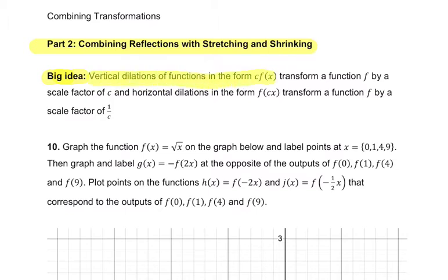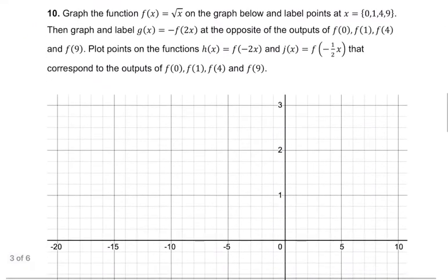Vertical dilations of this form transform a function f by a scale factor of c, vertically. In horizontal dilations of this form, transform a function f by this scale factor. So if it's multiplying x by c, it's not a scale factor of c for horizontal. It's a scale factor of 1 over c. And we're going to play with that idea.